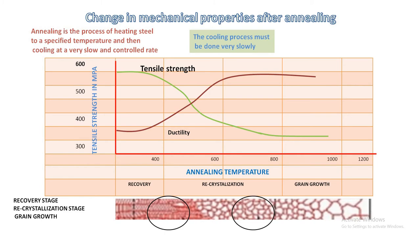The third stage is the grain growth stage. Cooling the material at a specific rate causes new grains to develop, after which the material will be more workable. Subsequent operations to alter mechanical properties can be carried out following annealing.